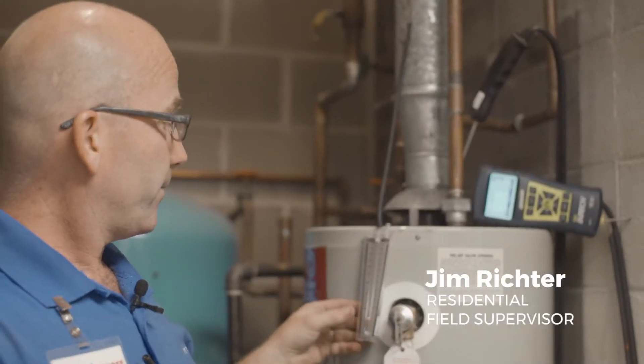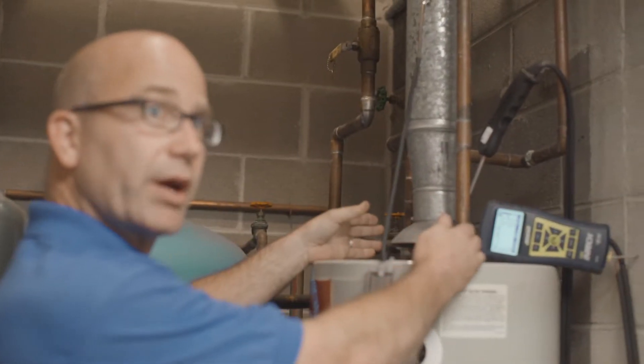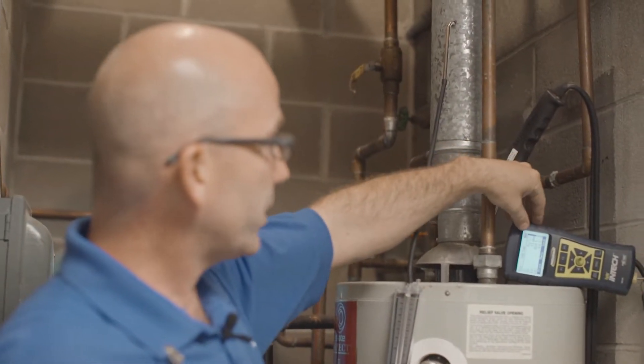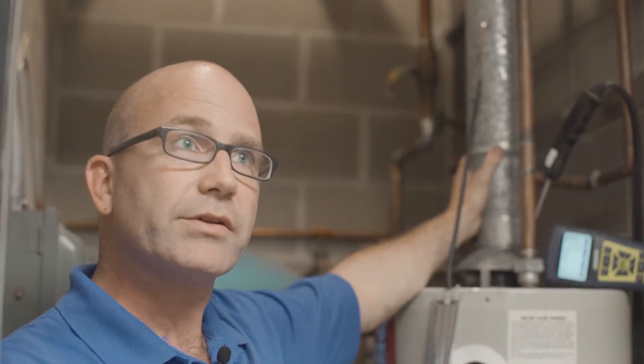So the reason we do the combustion analysis at the same time as the draft, let's say there were no draft and all the flue products are coming out of this draft diverter right here. This number right here is at 23, 24 parts per million, which even if this were not drafting at all and all of it were spilling into the house, that's not enough to cause a health concern.